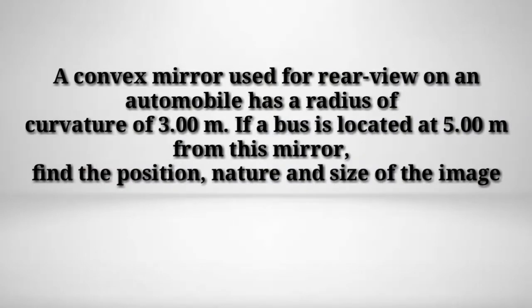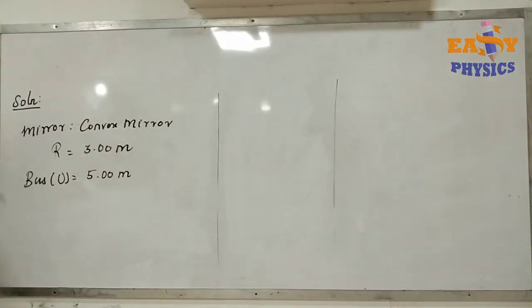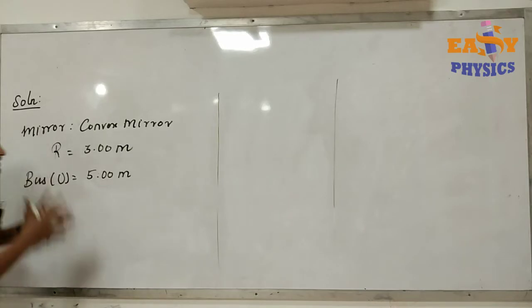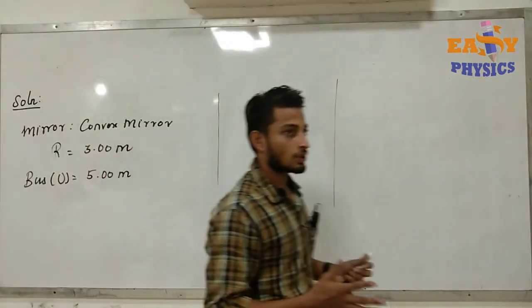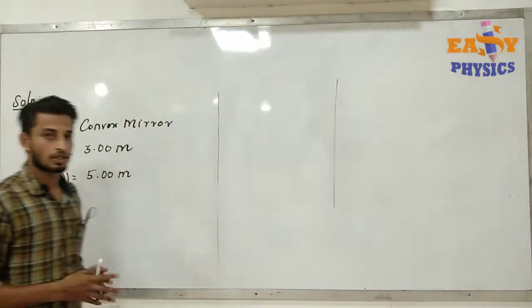A convex mirror used for rear view on an automobile has a radius of curvature of 3 meters. If a bus is located at a distance of 5 meters from this mirror, find the position, nature, and size of the image. The mirror is a convex mirror, which is used in vehicles because it produces a virtual image.